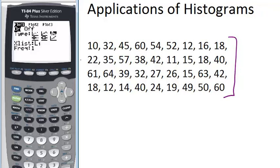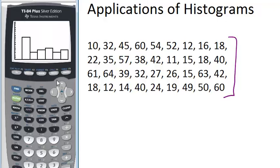Notice that now we only have list 1 highlighted and that's good. Once you've set up the correct stat plot, you can make your graph. So just click graph and you should see your histogram. There it is.